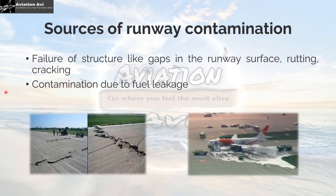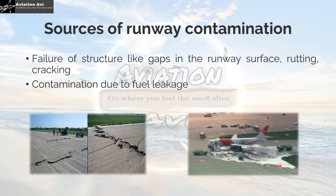Failure of structure such as gaps in the runway surface, rutting, and cracking also contributes to contamination. Due to excessive heating of the runway and continuous landings, there is a probability of developing cracks. In this picture the cracks are large, but sometimes fine cracks are formed which further reduce friction and may result in aircraft or wheel damage. Contamination due to fuel leakage is another source — as seen in this picture where an aircraft has met with an accident and fuel has spread over the surface, degrading the friction value.